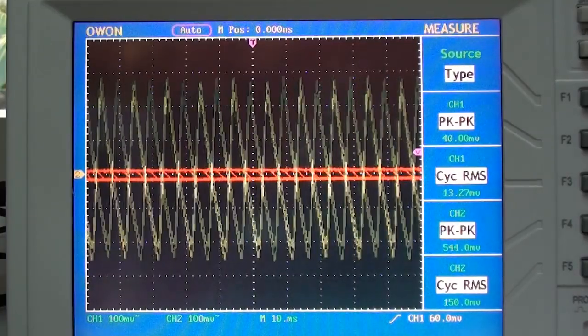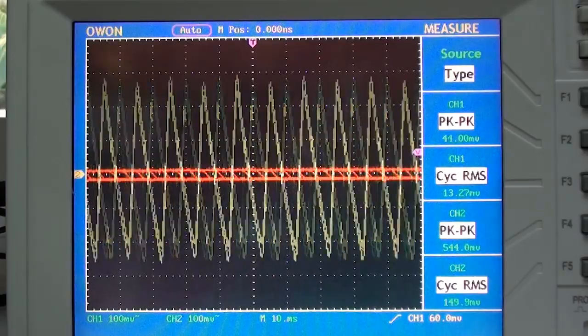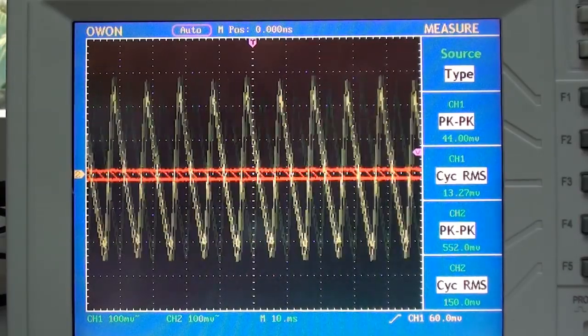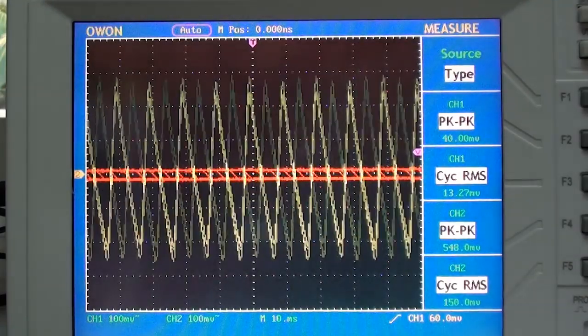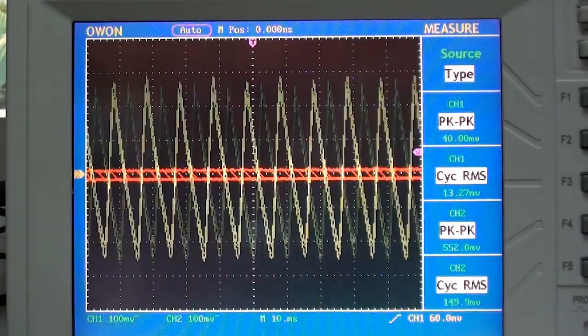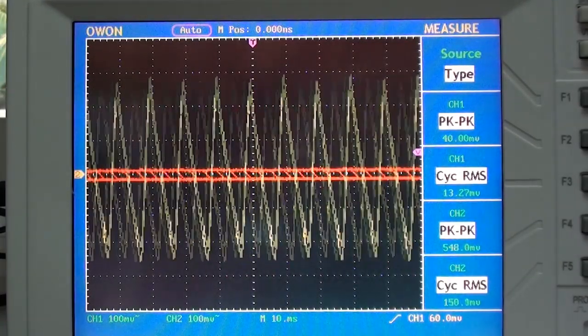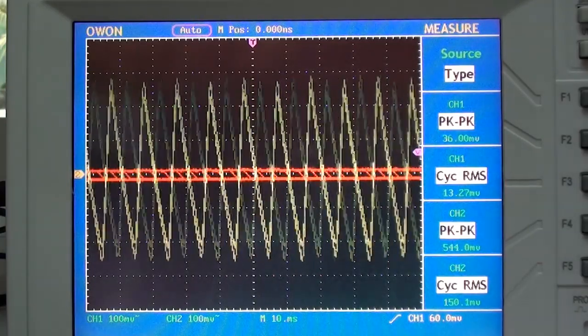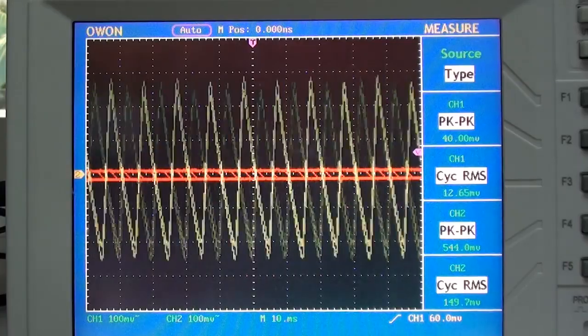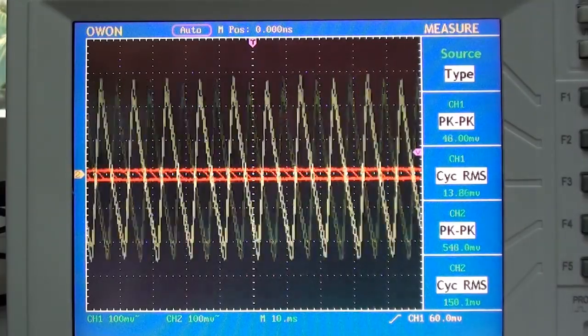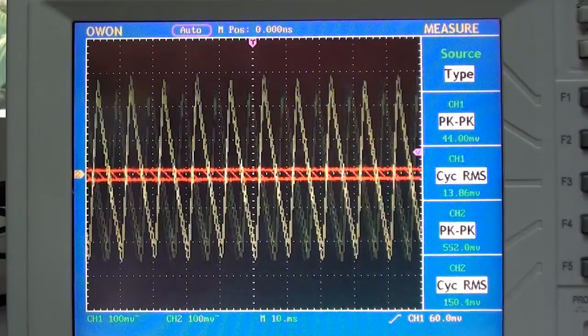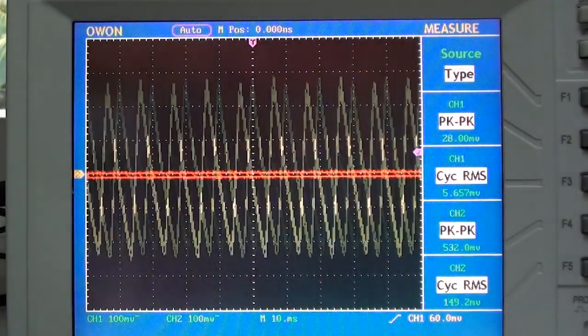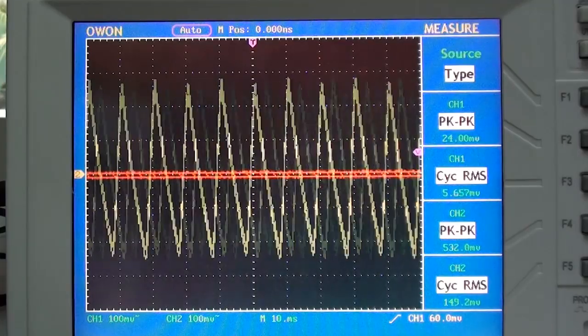So you can see that there's quite a difference in the quality of the signal that we're getting from this circuit and the quality that we got before. On the input side we have a peak-to-peak variation of about 548 millivolts which is quite significant. On the output side we have a peak-to-peak variation of about 40 to 44 millivolts which is significantly higher than the 7.2 millivolt variation we had with the battery supply.